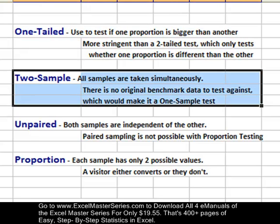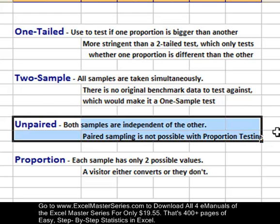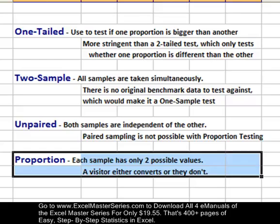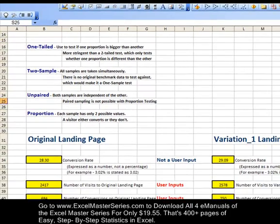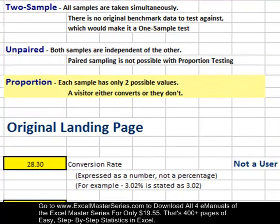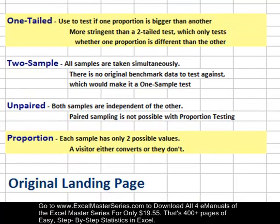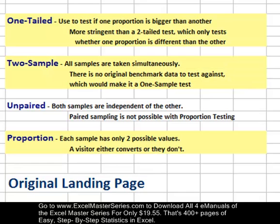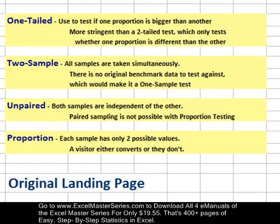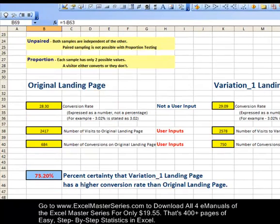We're creating a one-tailed, two-sampled, unpaired hypothesis test of proportion. A hypothesis test of proportion means that each sample has only two possible values — a visitor converts or they don't. A one-tailed test is more stringent than a two-tailed test and determines whether something is actually bigger, not just different. Two samples means both samples are taken simultaneously with no original sample data. And unpaired means both samples are independent of each other.